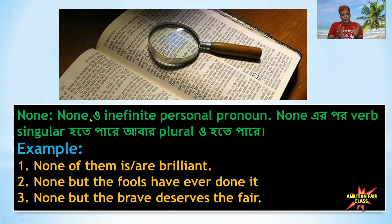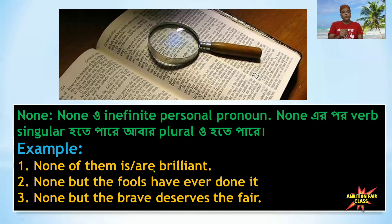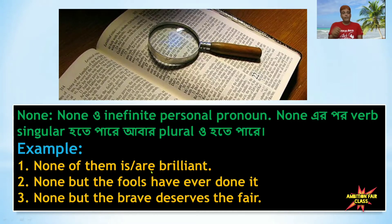Now, 'none.' None means 'not one' or 'not any.' None is an individual singular word, but it can be used in a singular or plural way. For example: 'None of them is brilliant' and 'None of them are brilliant' are both acceptable.